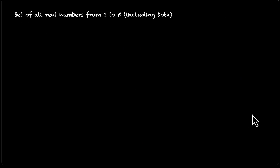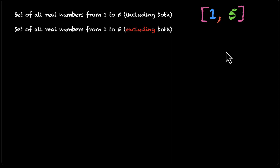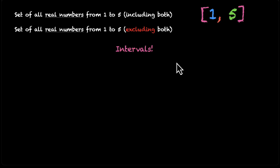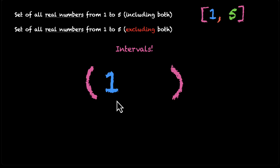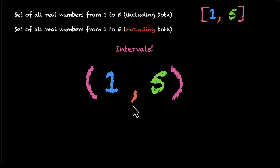Let's do one more example. We have the set of all real numbers from 1 to 5 including both — that's [1, 5]. Now how do you write the set of all real numbers from 1 to 5 excluding both? This is also a set of infinite points, but the difference is we're not including 1 and 5. The answer again is intervals. For this case we use curved brackets — the starting point remains 1, the ending point remains 5, and we have a comma. This curved bracket means we take all points from 1 to 5 but do not include 1 or 5.